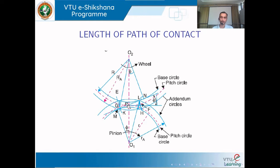The same procedure is adopted for the pinion to find the path of recess. Considering the right-angled triangle O₁, M, L, Pythagoras' theorem gives ML. Then using triangle O₁MP, we find MP = O₁P·sin φ. Subtracting ML minus MP gives the distance PL, the length of path of recess. The total length of path of contact is KP + PL.